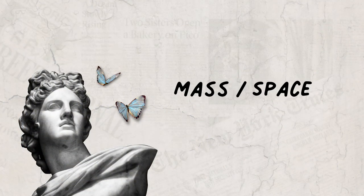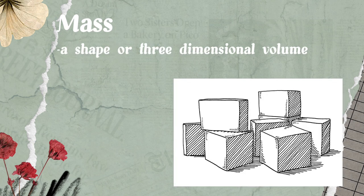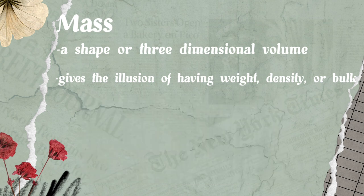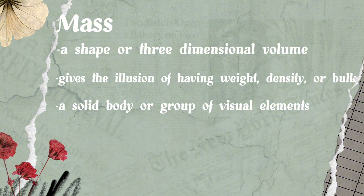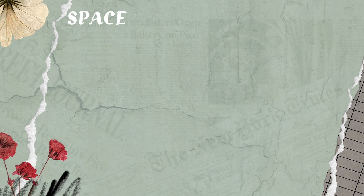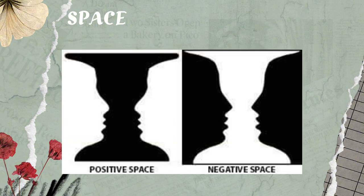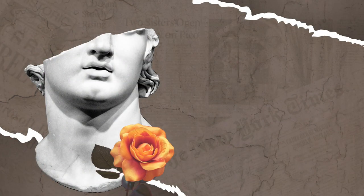Mass is one of the elements of painting. A mass refers to a shape or three-dimensional volume that has or gives the illusion of having width, density, or bulk. It is a solid body or a grouping of visual elements — lines, color, texture, etc. — that compose a solid form. Space, as a basic art element, refers to the distance between and the area around shapes, forms, colors, and lines. There are two types of space: positive and negative. Positive space refers to the area of interest and focus in a piece of artwork, while negative space describes the space surrounding a subject.